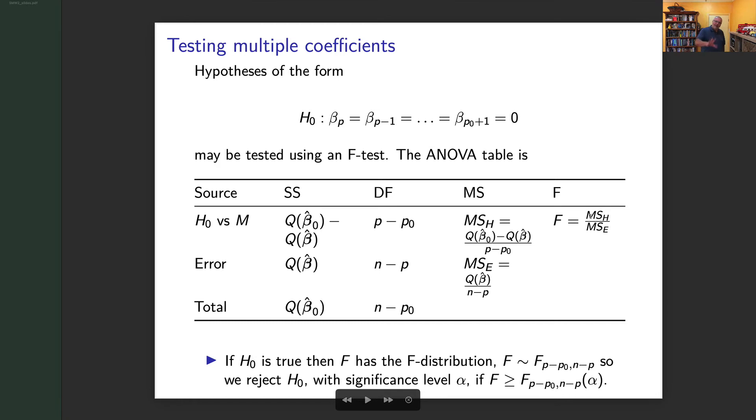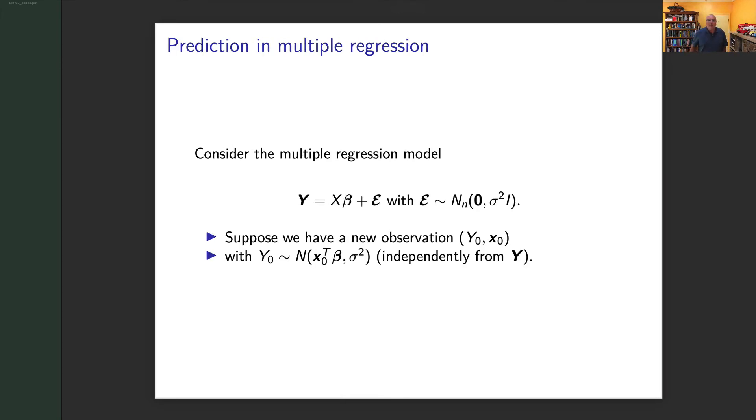What about if I want to do prediction? Now remember, there's two sorts of prediction that I can do. Well, no, there's one sort of prediction, two sorts of prediction intervals. And when I say prediction intervals, one's a confidence interval, one's a prediction interval. So I think now I've confused you enough. Let's go through it slower. Let's imagine I've got my multiple regression model.